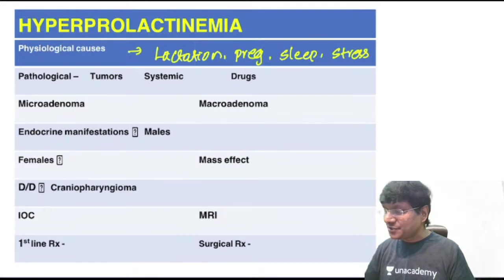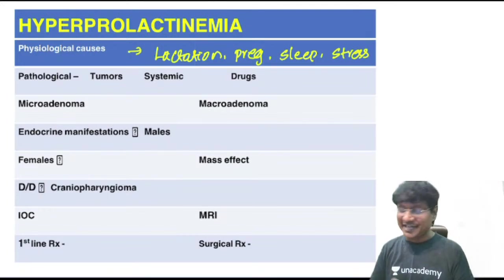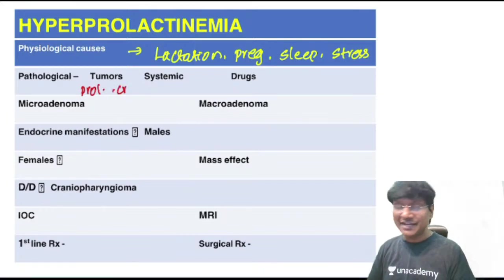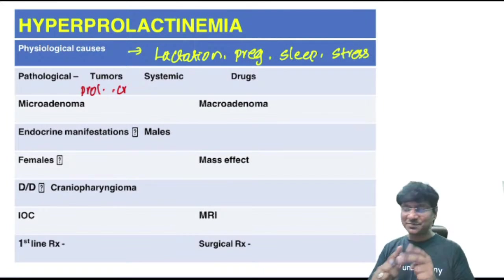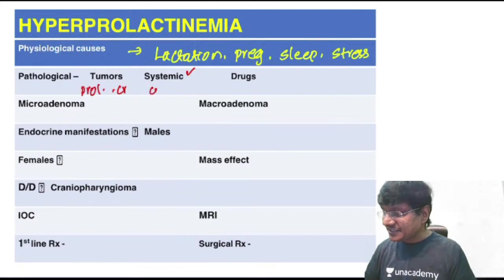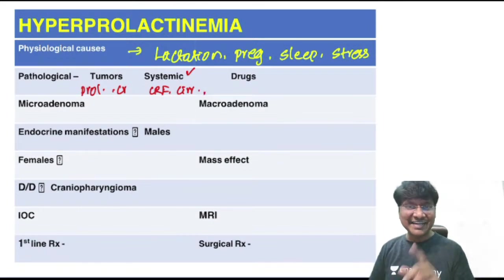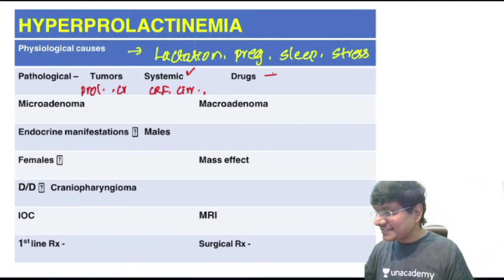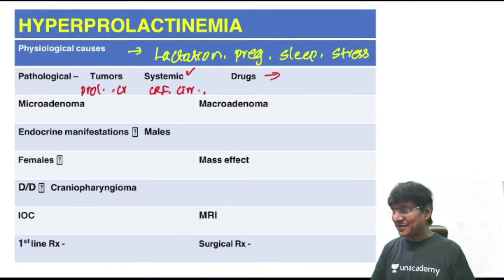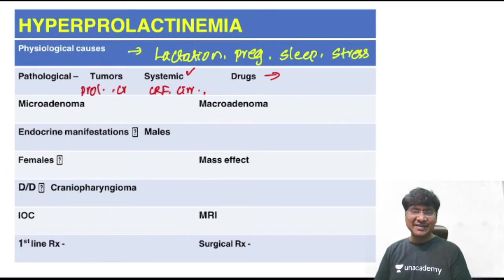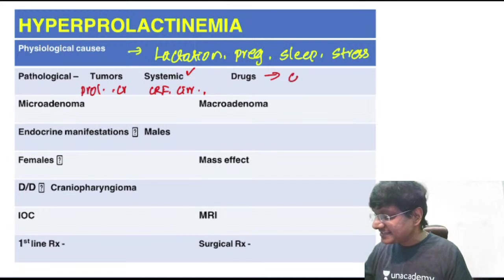Tumors causing hyperprolactinemia are prolactinoma and craniopharyngioma. Systemic causes include chronic renal failure, cirrhosis of liver, and primary hypothyroidism.